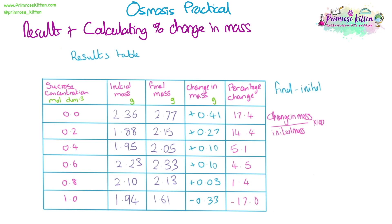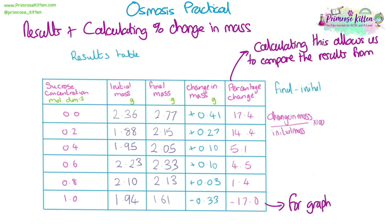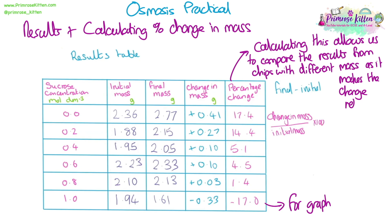It is these percentage change numbers that we use to plot our graph, and that will help us calculate the concentration that matches the cell cytoplasm. The reason we calculate percentage change rather than just change in mass is that it allows us to compare results from each chip, because they all have different starting masses. By turning it into a percentage, we make the change in mass relative to the start mass, so it doesn't matter what the start mass was — we can compare these results.